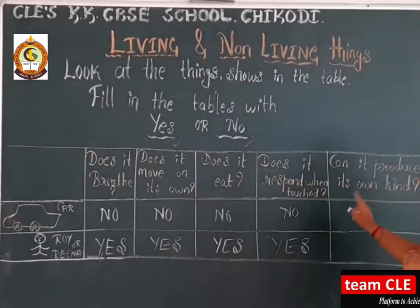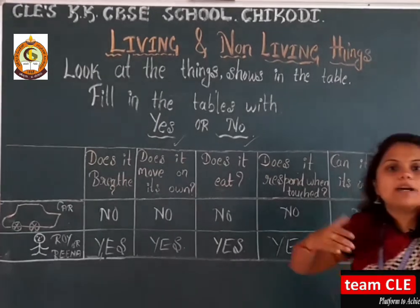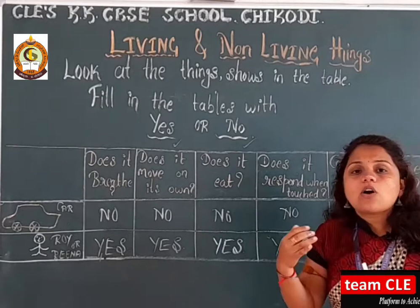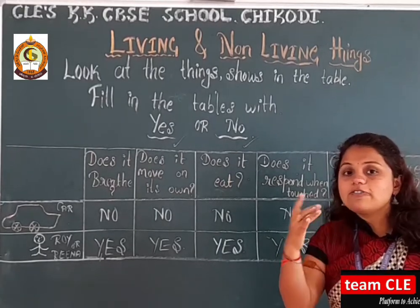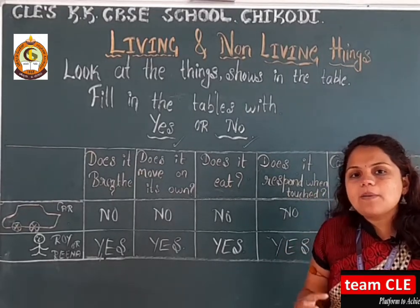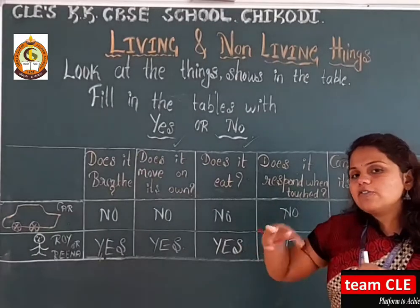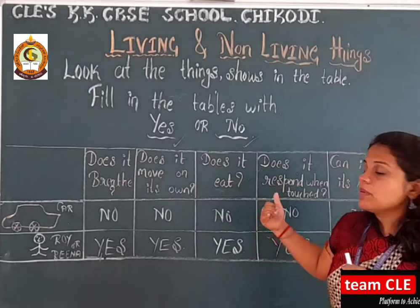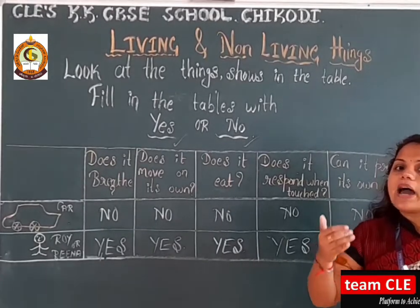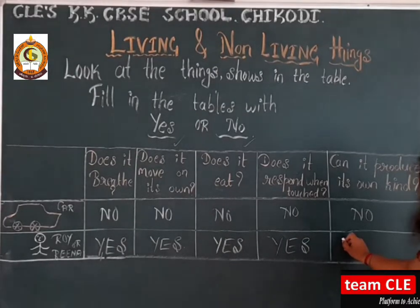Finally, the last question: can it produce its own kind? Roy, after getting married, what happens? They become parents. Sometimes your parents say you look the same as your father or mother, because some face features and habits are similar between child and parents. So whether Roy and Reena after getting married can produce their own kind? Yes, parents can reproduce their own kind. The answer is yes.